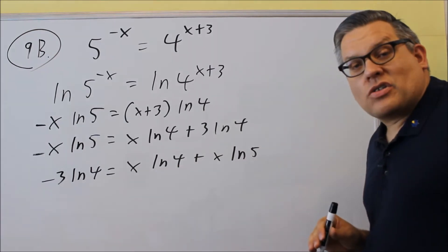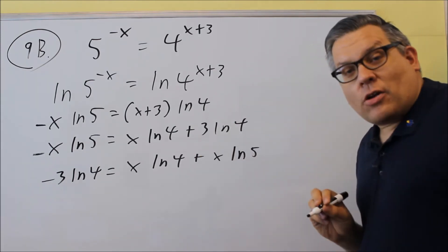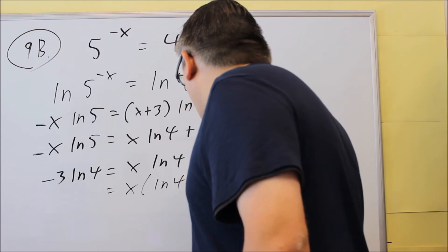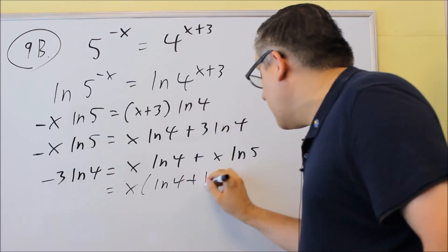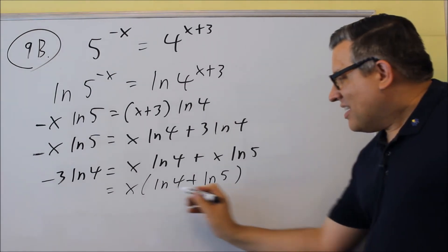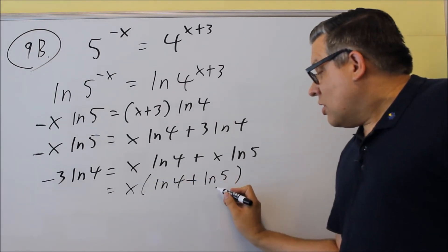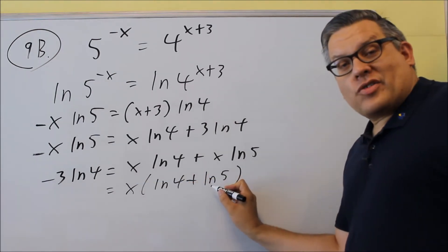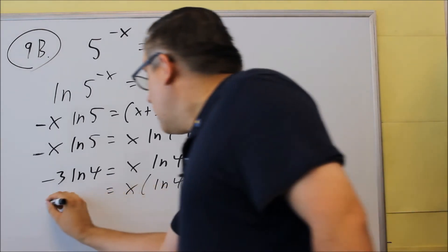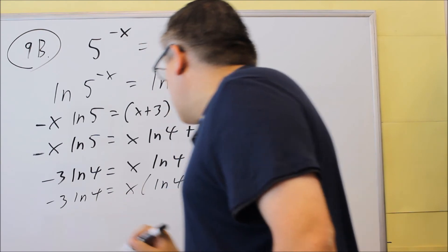The reason why you want to do that is because now you have a common factor that you can pull out. So I'm going to factor out an x. And we get ln 4 plus ln 5 left over. So again, taking out the common factor. x is common to each of those. You're left with ln 4 plus ln 5. These are not like terms, so you can't combine these anymore. Then we have negative 3 ln 4 on this side.